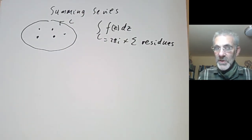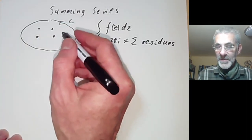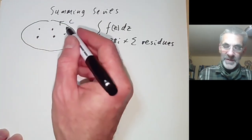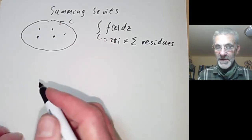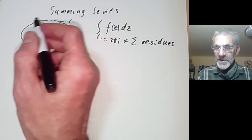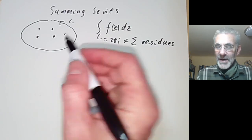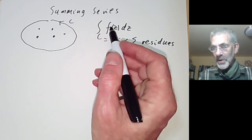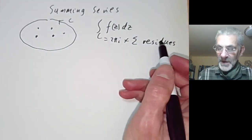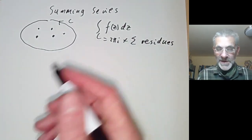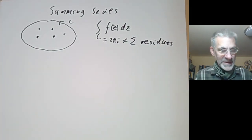This looks totally useless for summing series because first there are only going to be a finite number of points inside the contour in general if the contour is finite. And secondly, working out the integral around this contour directly is going to be an incredibly difficult problem — usually we can only do it by first adding up the residues inside. So this doesn't really seem to help at first sight.